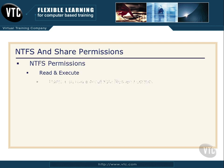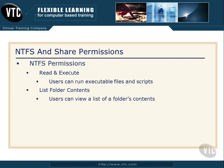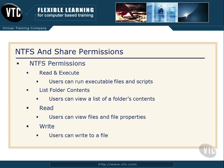Next up is Read and Execute. Users can run executable files and scripts in the folders, and they can read the data in the files. List Folder Contents simply allows users to view a list of the folder's contents. The Read permission allows users to view files and file properties in the folders. And the Write permission is pretty straightforward — users can write to a file and basically make changes.